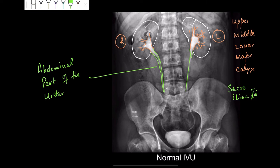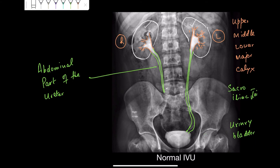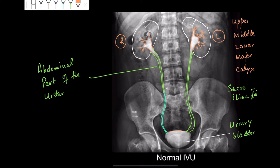You can see the ureter coming down, and this ureter crosses in front of the sacroiliac joint. On the left side it's going close to the spine of the ischium, and then you can see it opening into the cavity of the urinary bladder, where it is now very clearly visible. Both ureters have opened into the cavity or lumen of this urinary bladder.